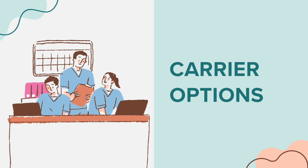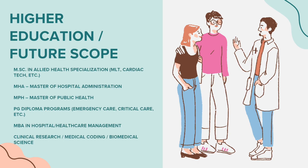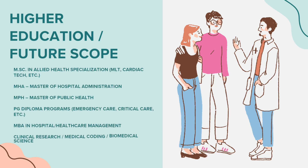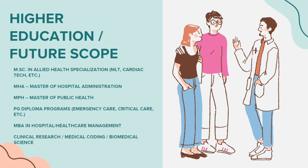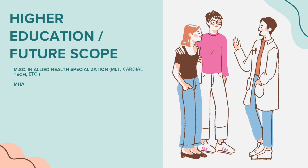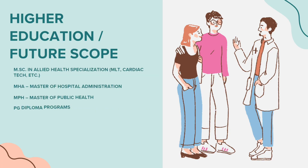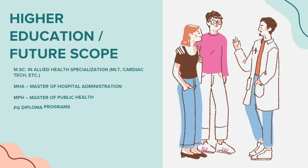For higher education and future scope after BSc Allied Health Sciences, you can pursue an MSc in Allied Health specializations like MLT or Cardiac Tech, a Master of Hospital Administration, a Master of Public Health, PG Diploma programs in Emergency Care or Critical Care, an MBA in Hospital or Healthcare Management, or studies in Clinical Research, Medical Coding, or Biomedical Sciences.